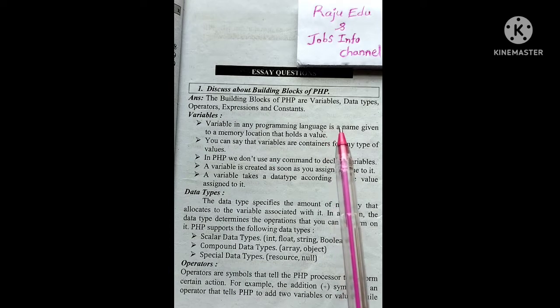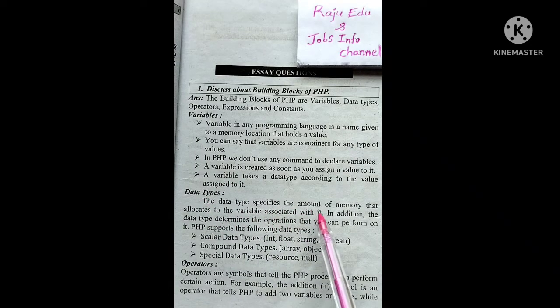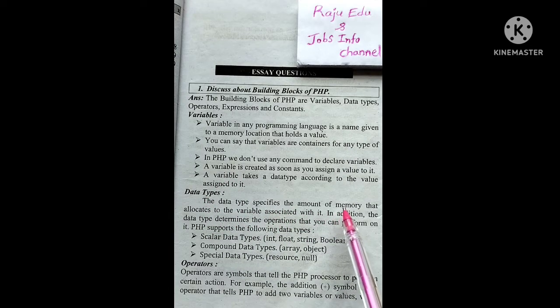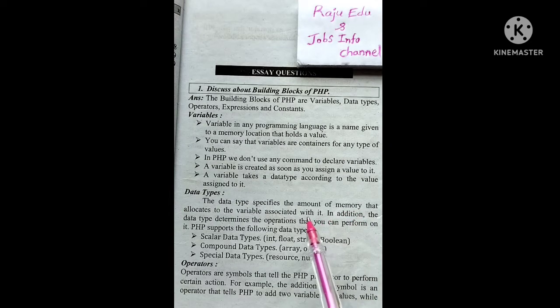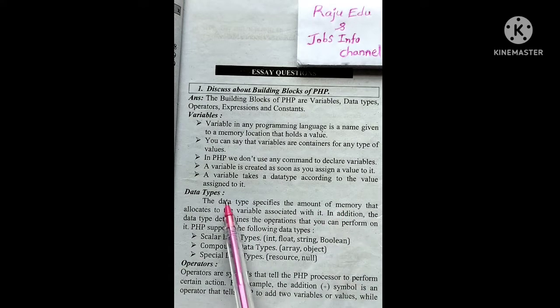Next, data types. The data type specifies the amount of memory that allocates to the variable. It determines what type of data the variable can store and the amount of memory it will use.